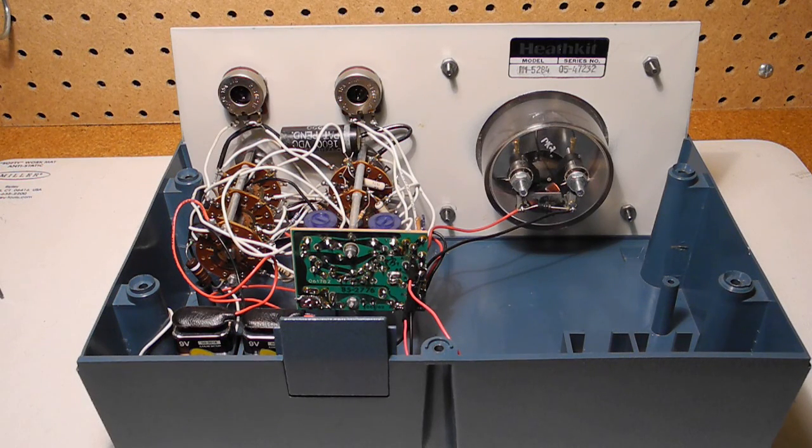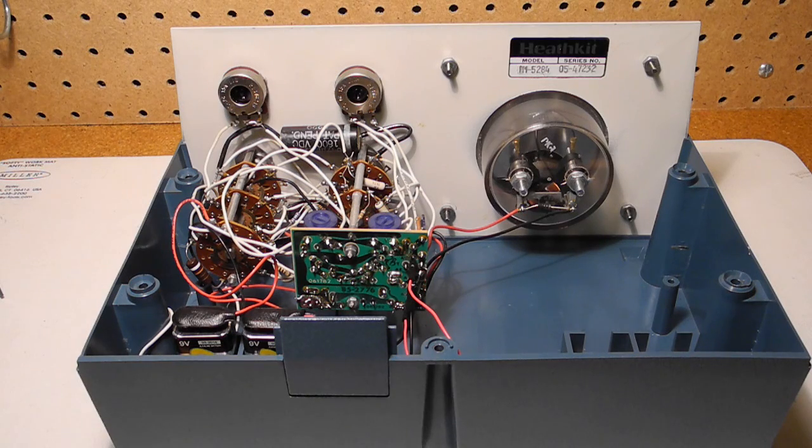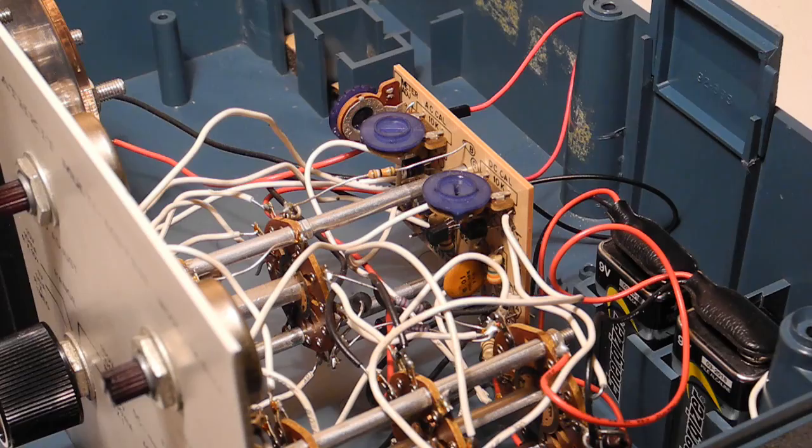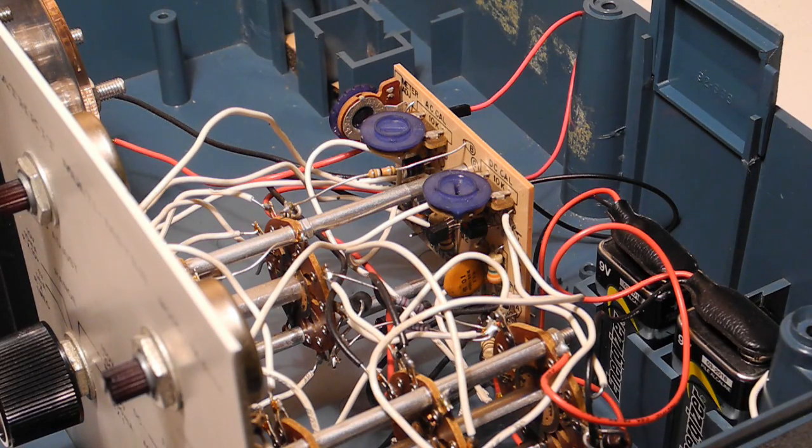Circuitry is on one small single-sided printed circuit board with a lot of point-to-point wiring around the two rotary switches. It's a very simple circuit and most of the complexity is just the switching between functions and ranges. It uses two FETs or field effect transistors and two bipolar transistors and features a bridge circuit similar to VTVM designs. The range switching circuitry uses 1% precision resistors.